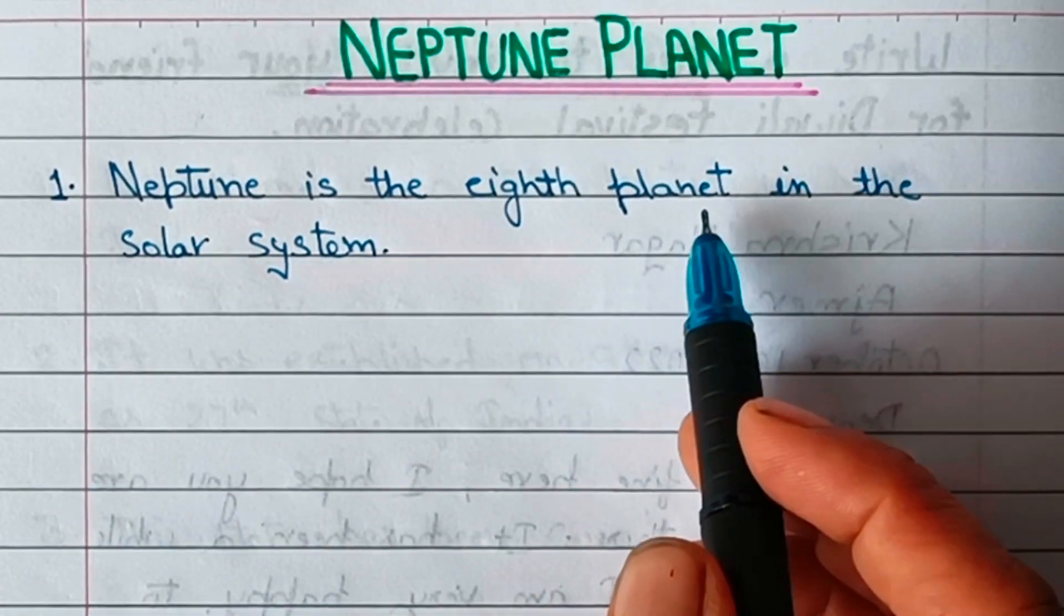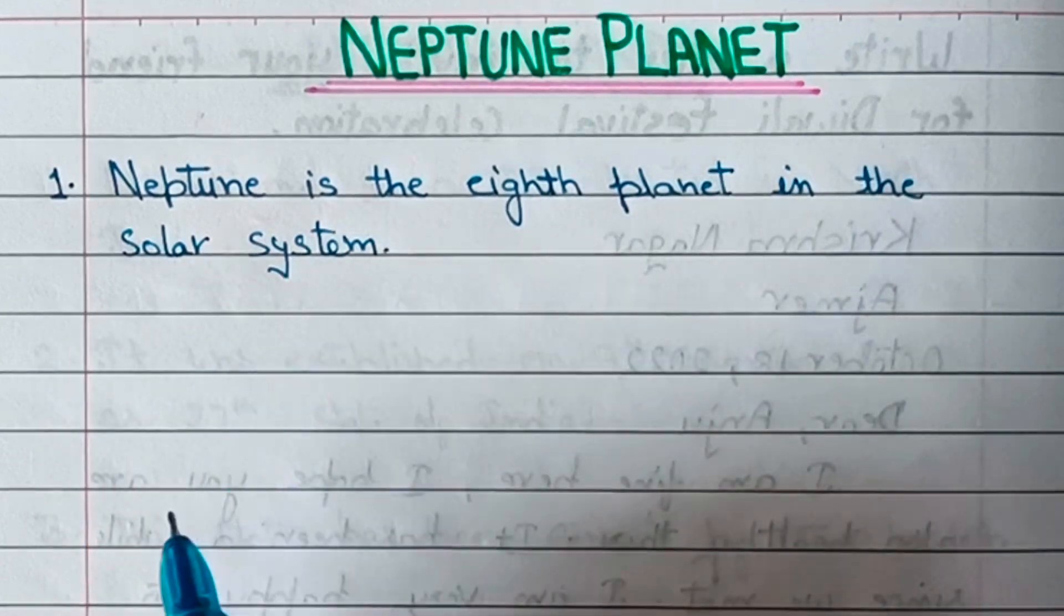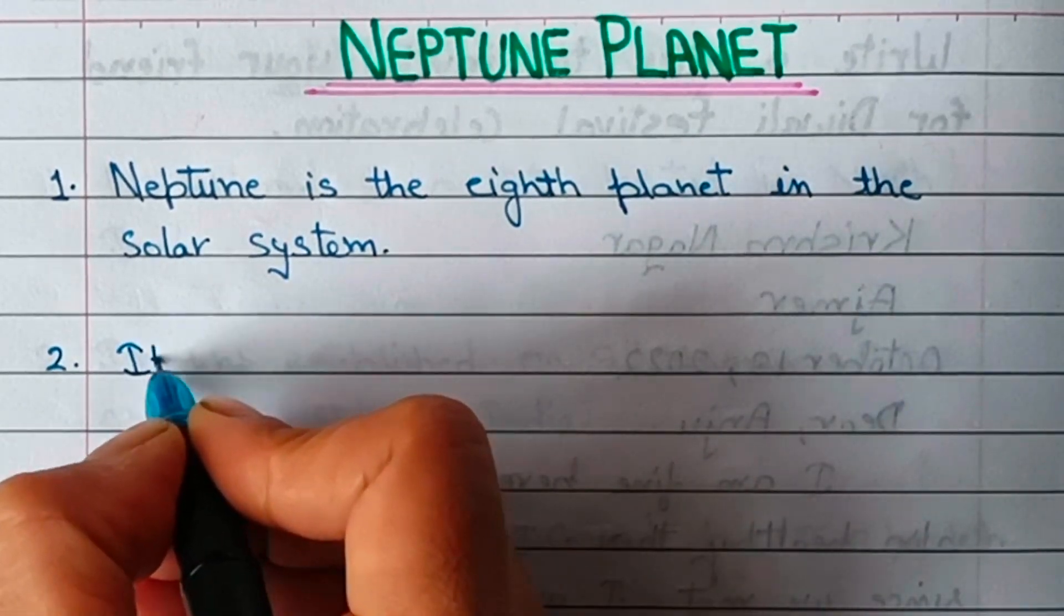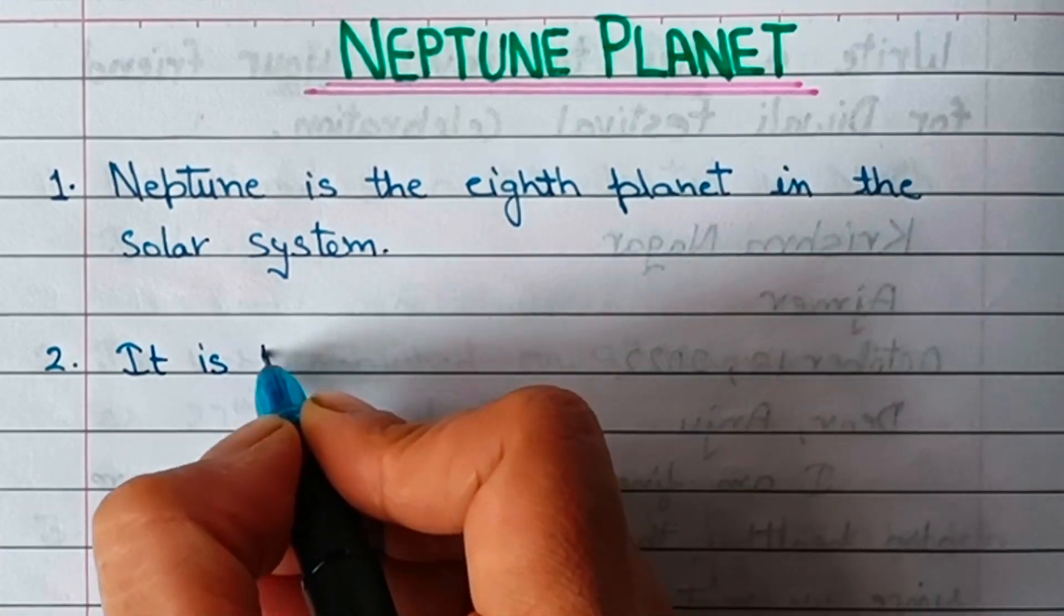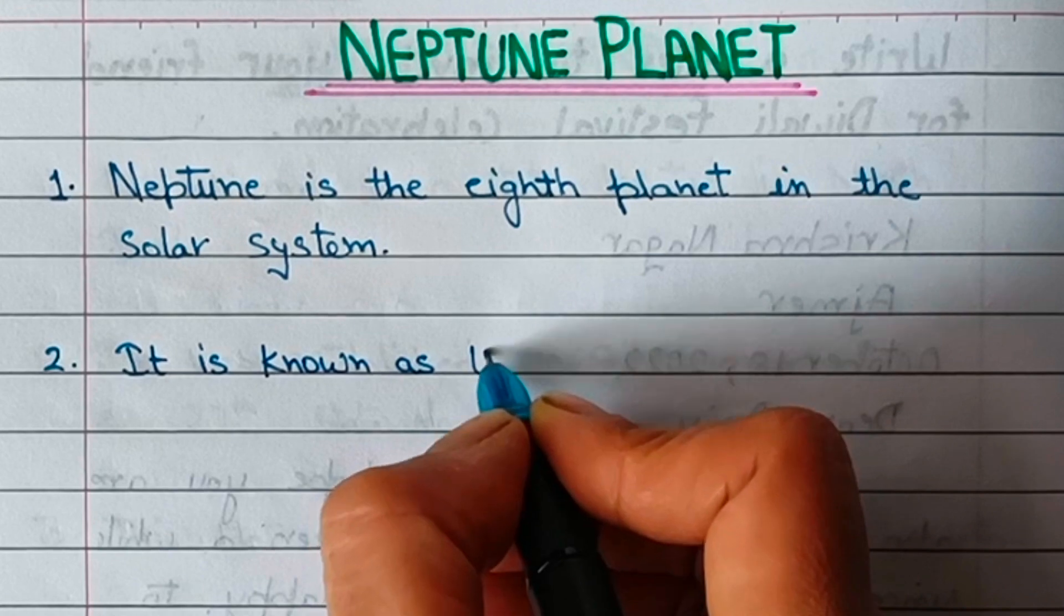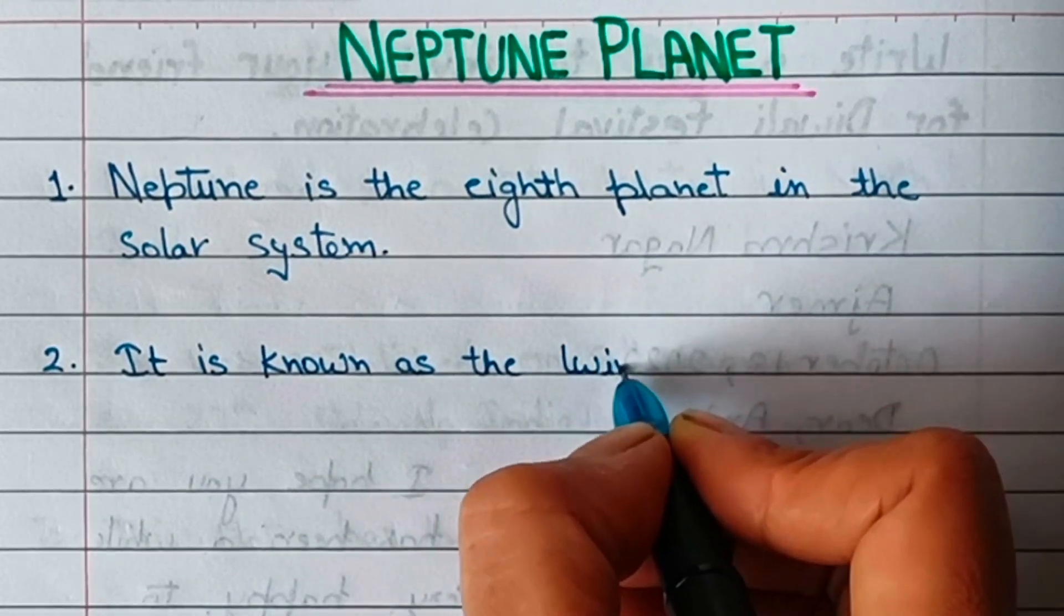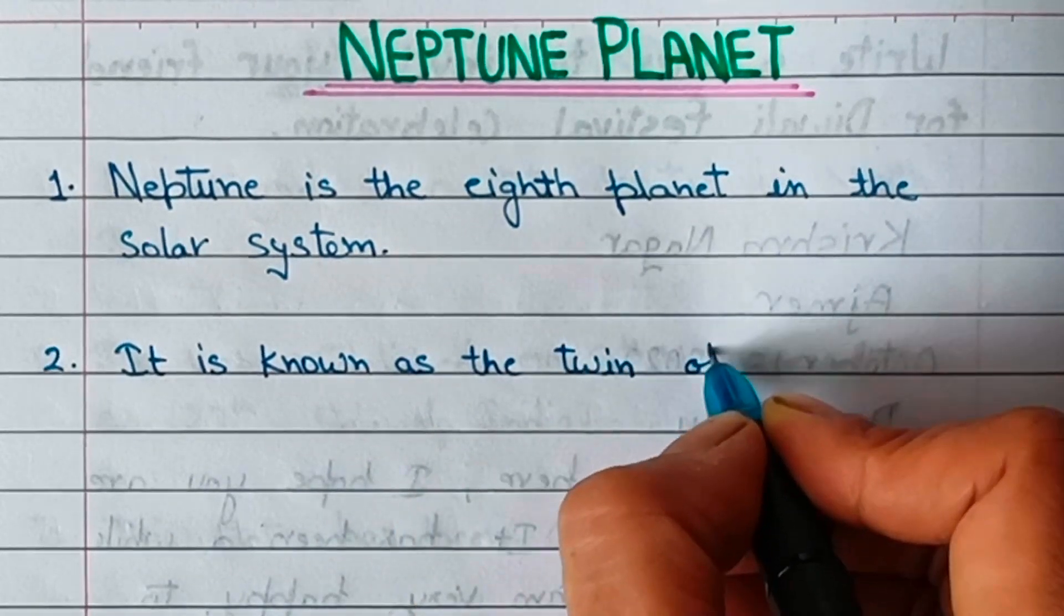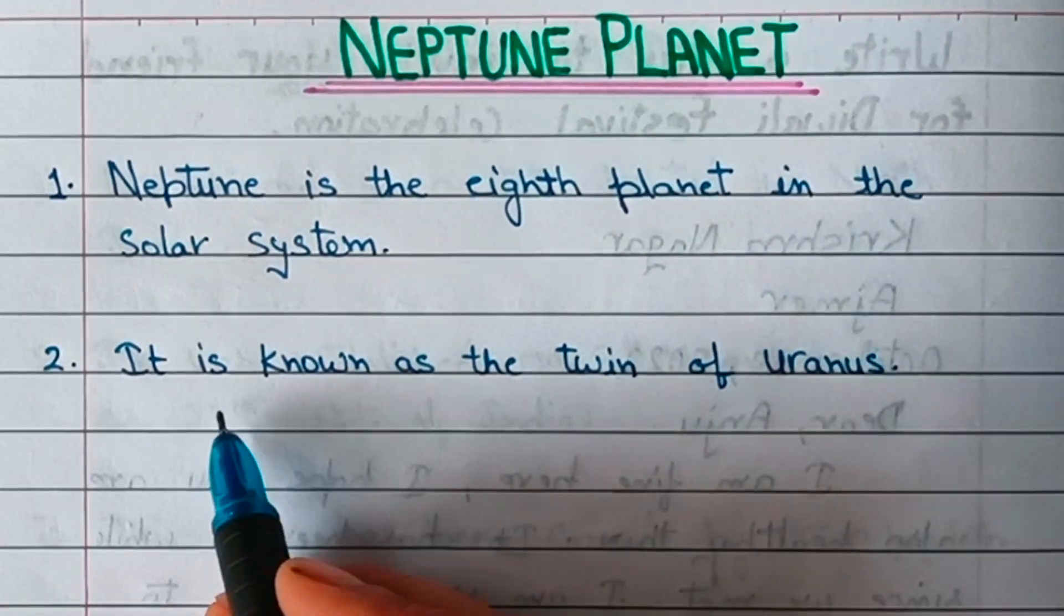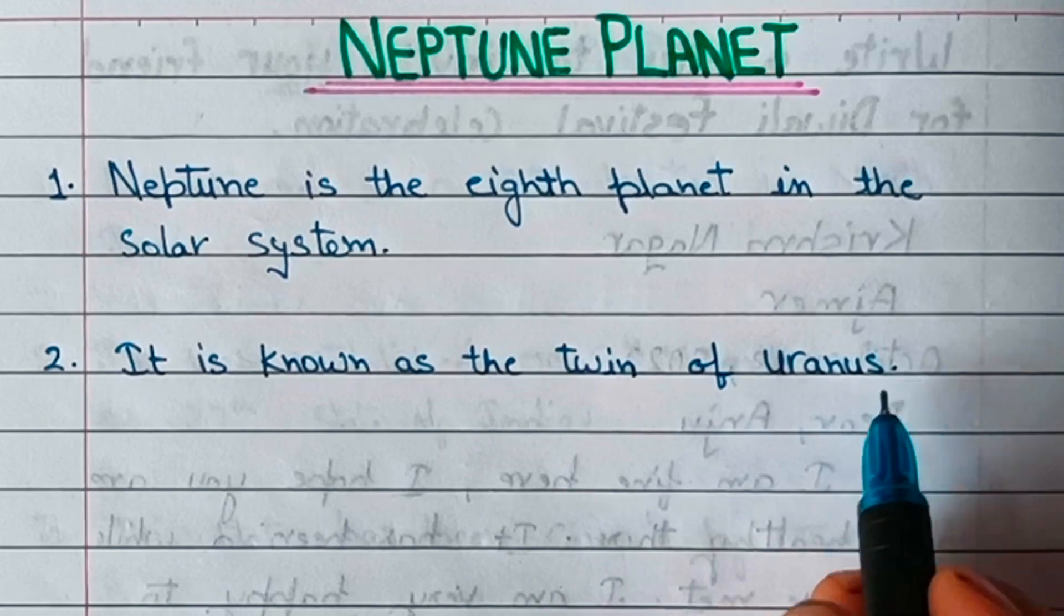Neptune is the eighth and last planet in the solar system. It is known as the twin of Uranus.